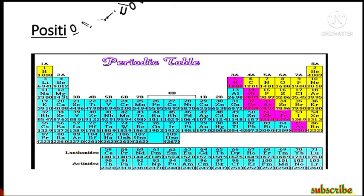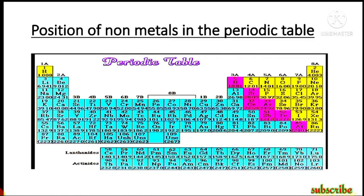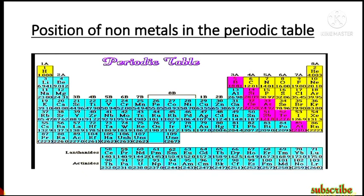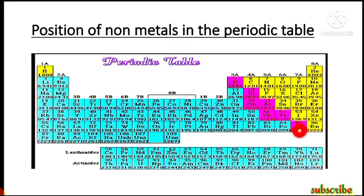Now let us look at the position of nonmetals in the periodic table. Except hydrogen, all nonmetals belong to the p-block. From group 14, carbon is the only nonmetal member. Group 15 has two: nitrogen and phosphorus. Group 16 has oxygen, sulfur, and selenium. Group 17 has fluorine, chlorine, bromine, iodine, and astatine. Group 18 — all members are nonmetals.